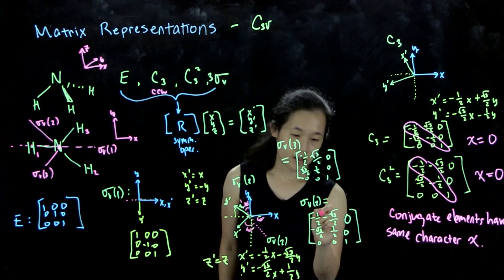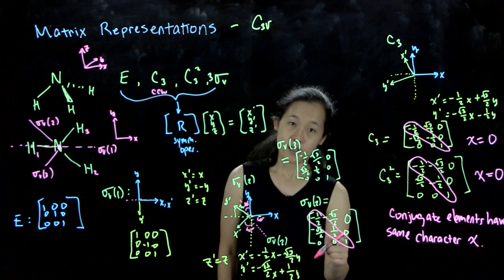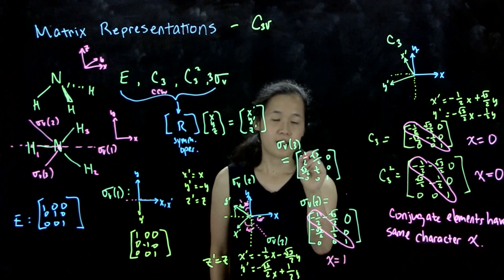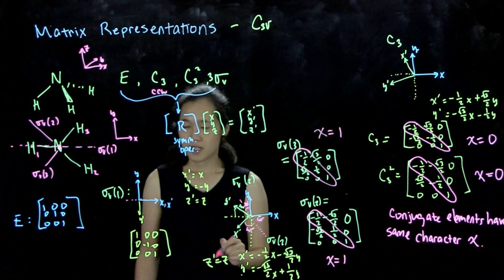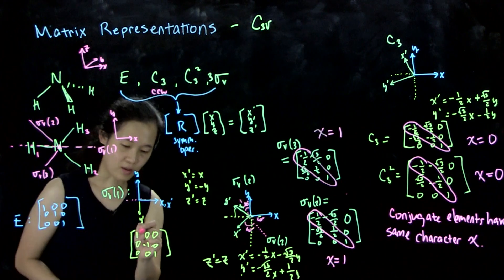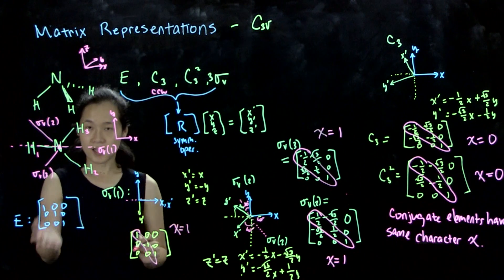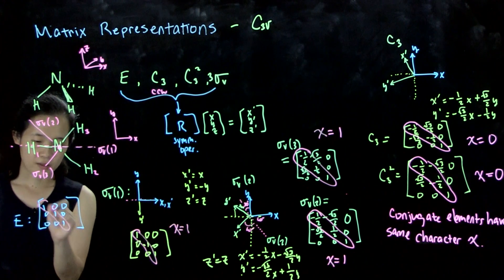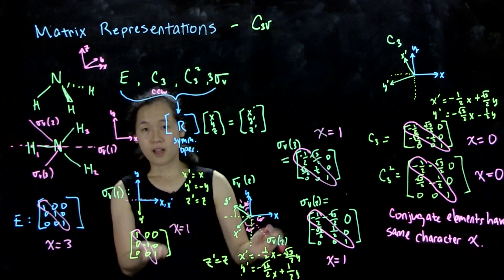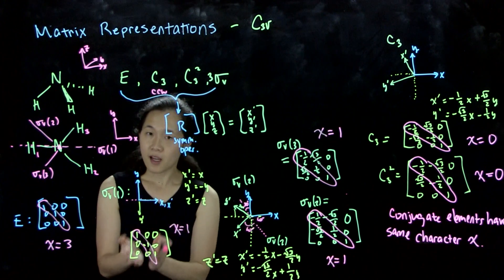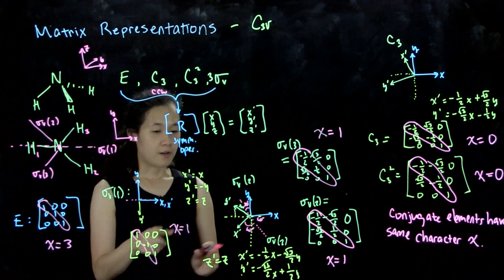Similarly, if we look at the character for our mirror planes, negative one-half, one-half, one, so this chi equals one. And you can see here, sigma v3, chi also equals one. And then here's our last sigma v, one minus one plus one, so chi equals one. And then we said that identity is always in a class by itself, and so chi equals three. And that's why we must know what elements are conjugate to each other because we can group them together. They all have the same character, and this comes into play later on when we work with molecular orbitals, character tables.